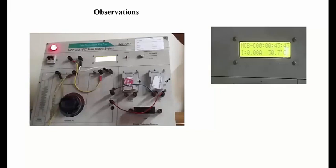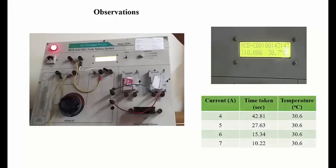The MCB trips at 14.81 seconds. Likewise, we'll be taking different sets of readings for different values of current at 5 ampere, 6 ampere, and 7 ampere. We observe that the time the MCB takes will reduce.